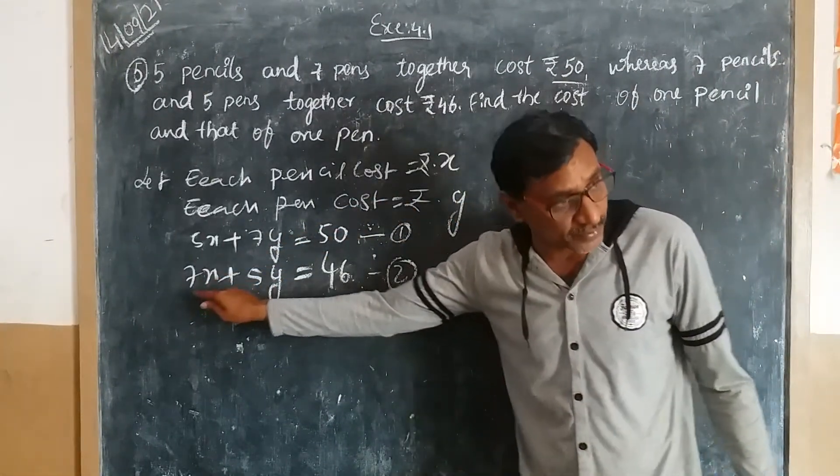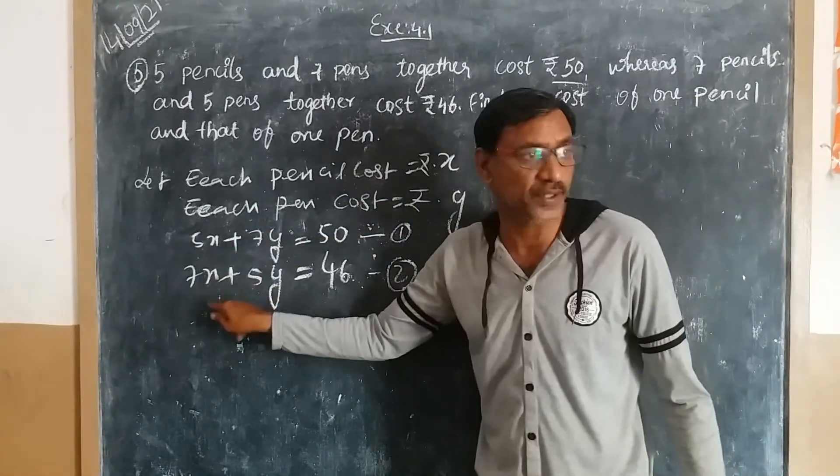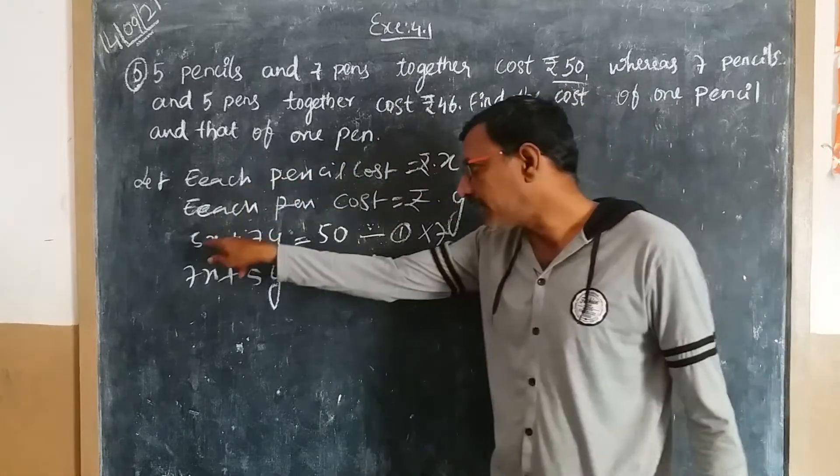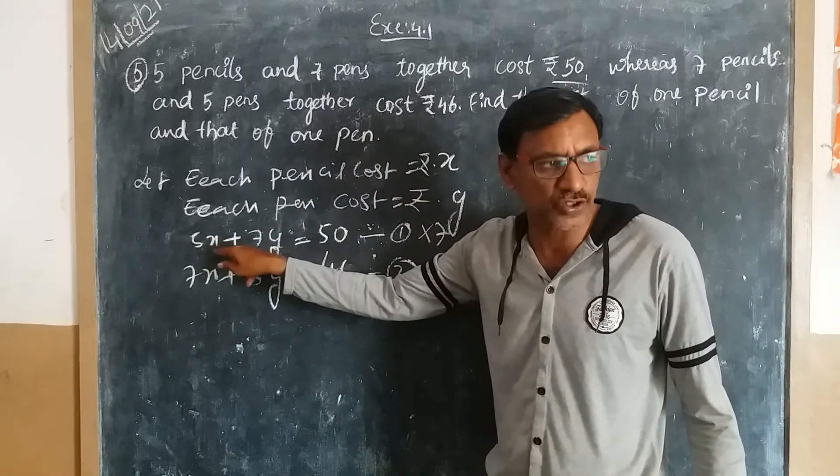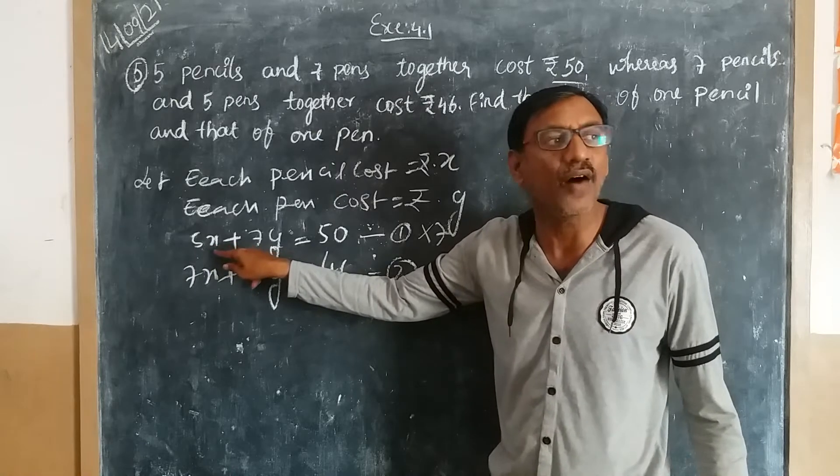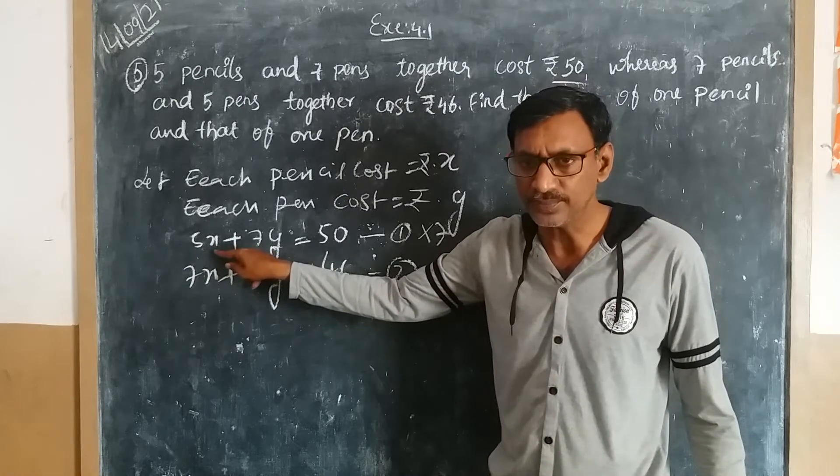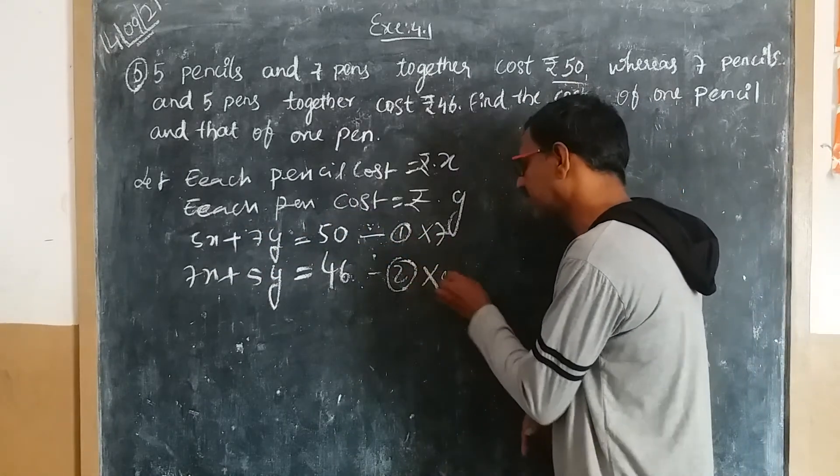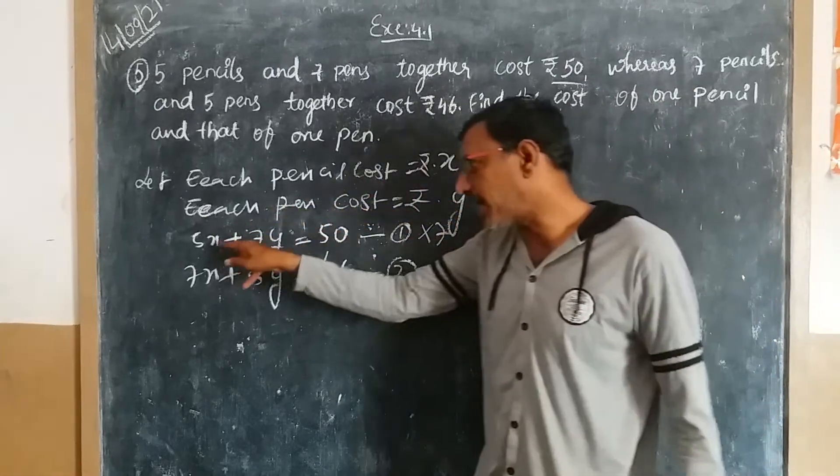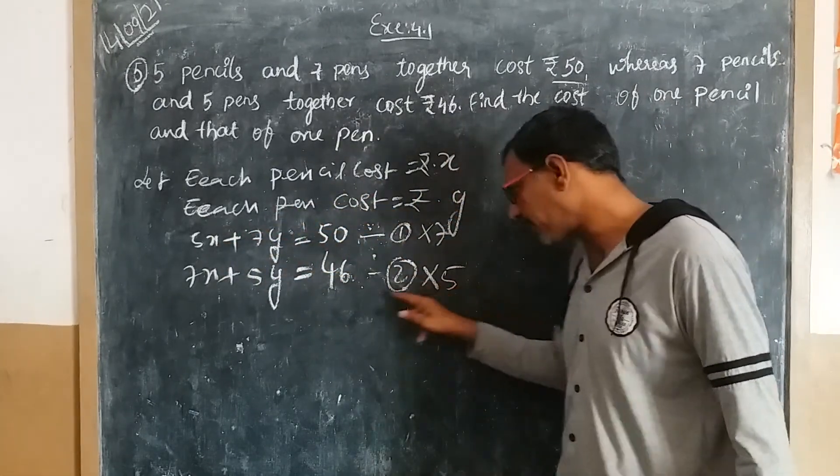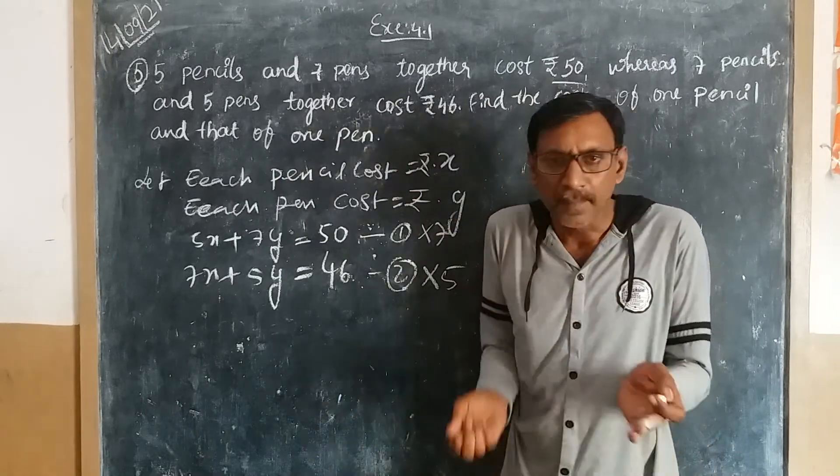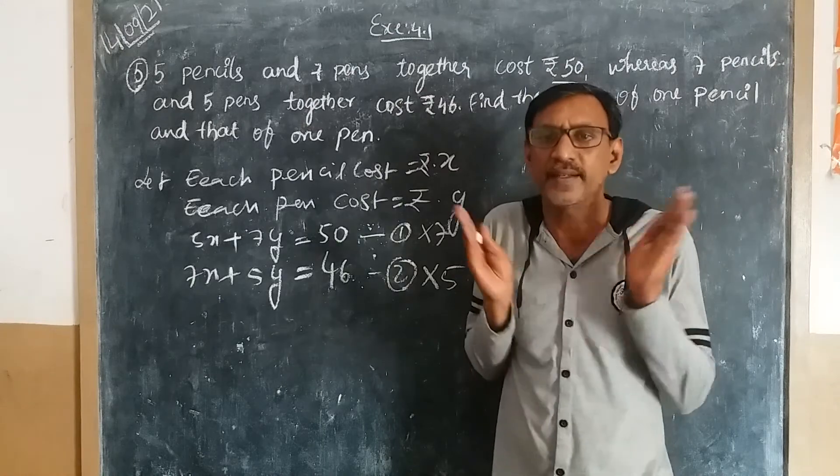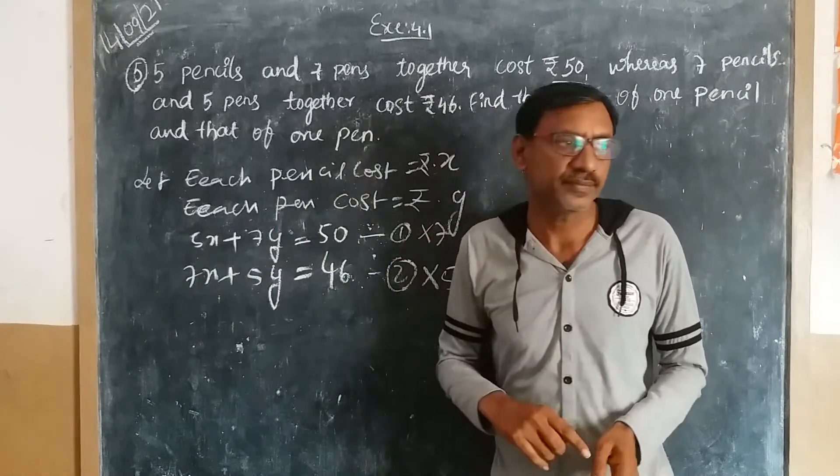Take the x coefficient from the second equation—that's 7—and multiply the first equation by it. And take 5, the x coefficient from the first equation, and multiply the second equation by it. Even if you multiply, the values increase, but there is no change in the equation itself.